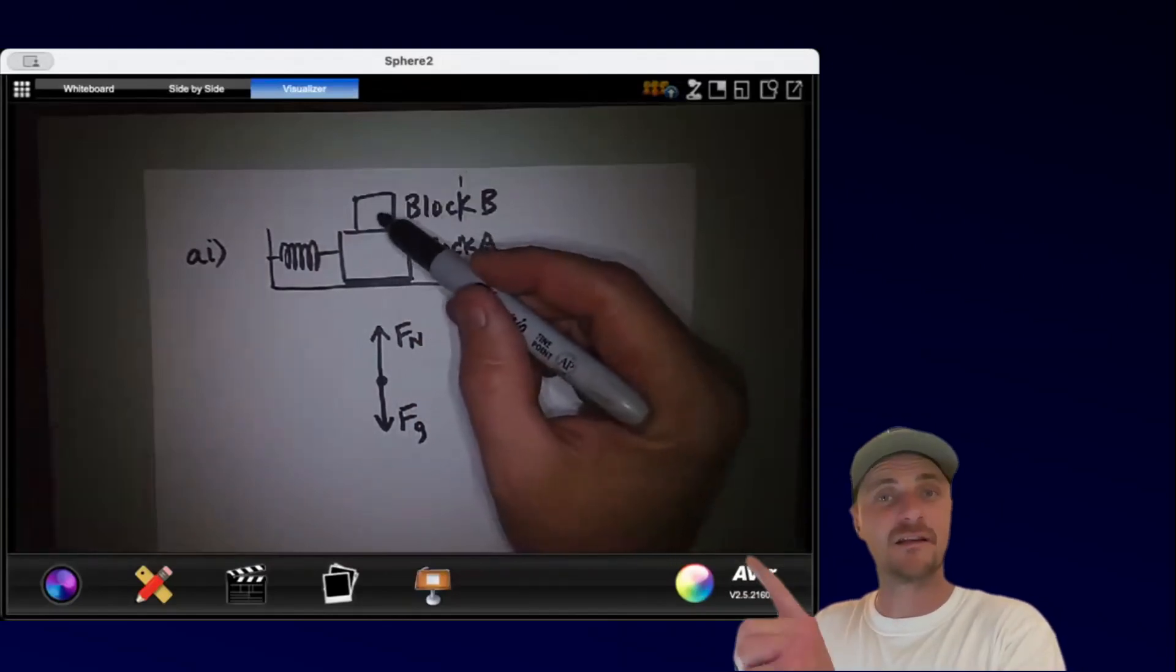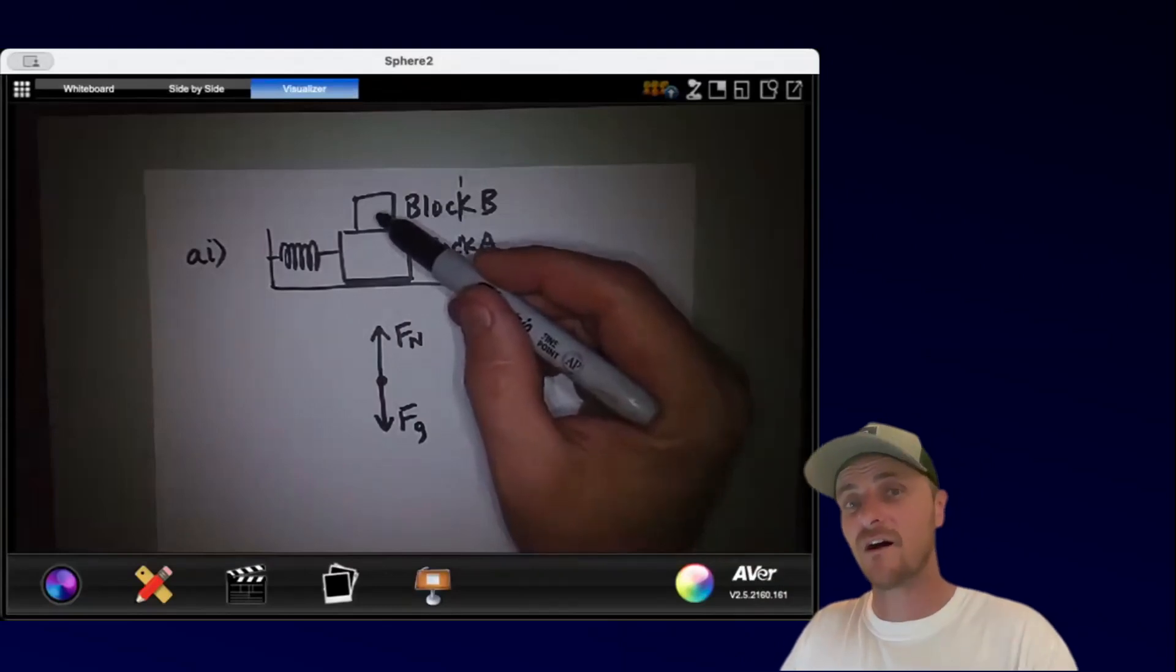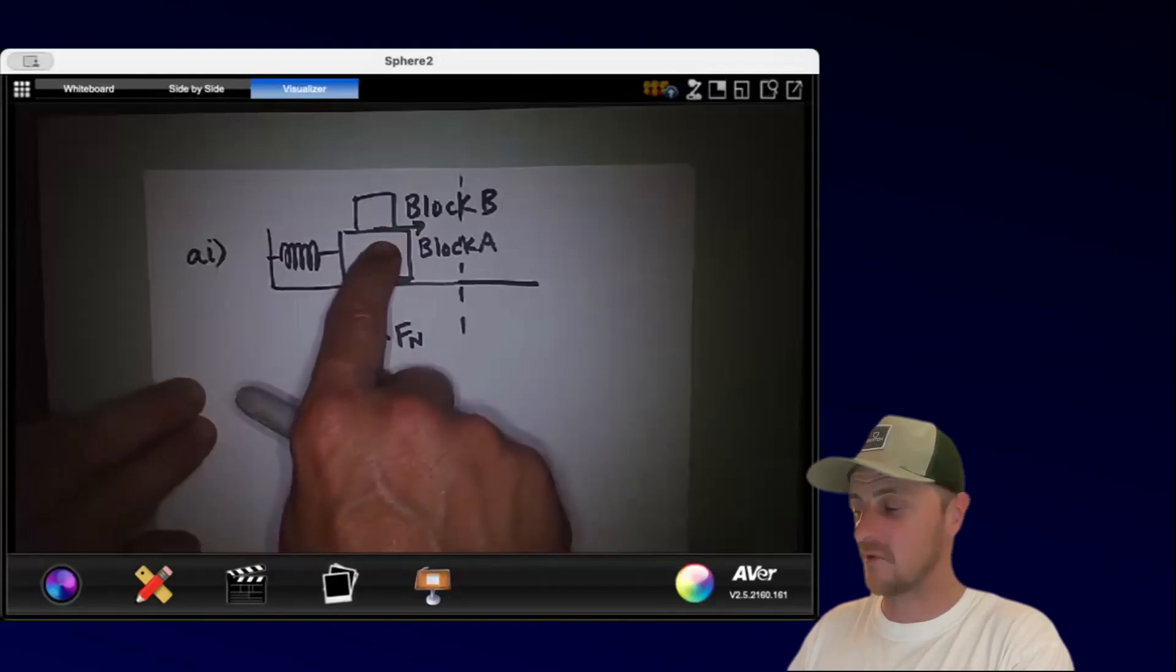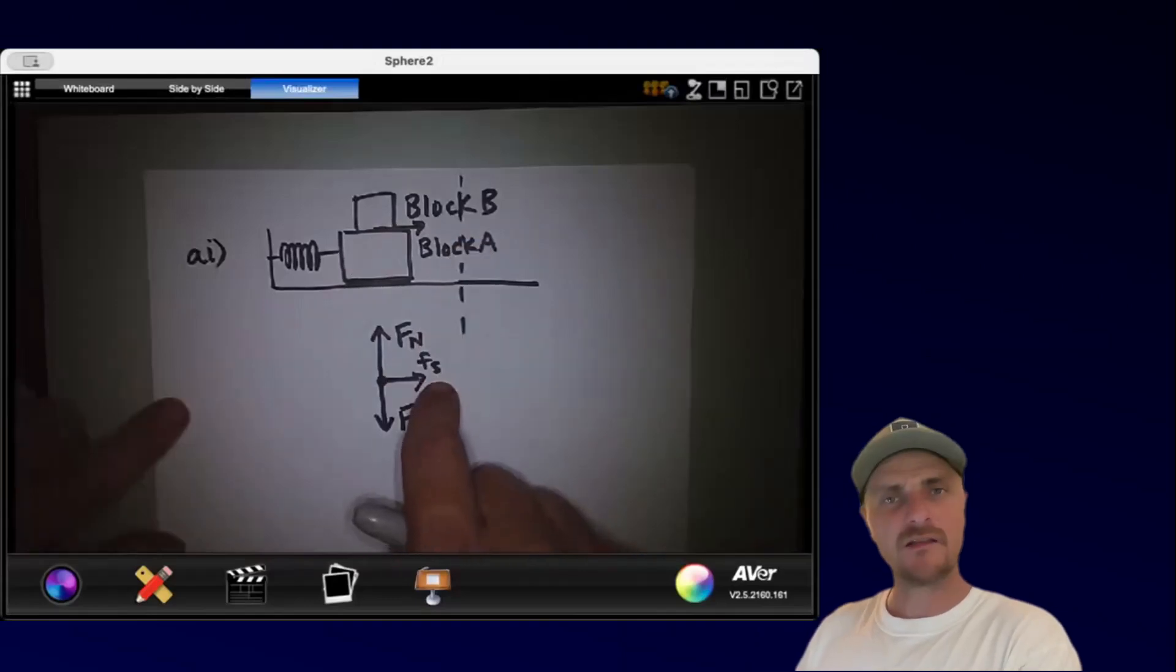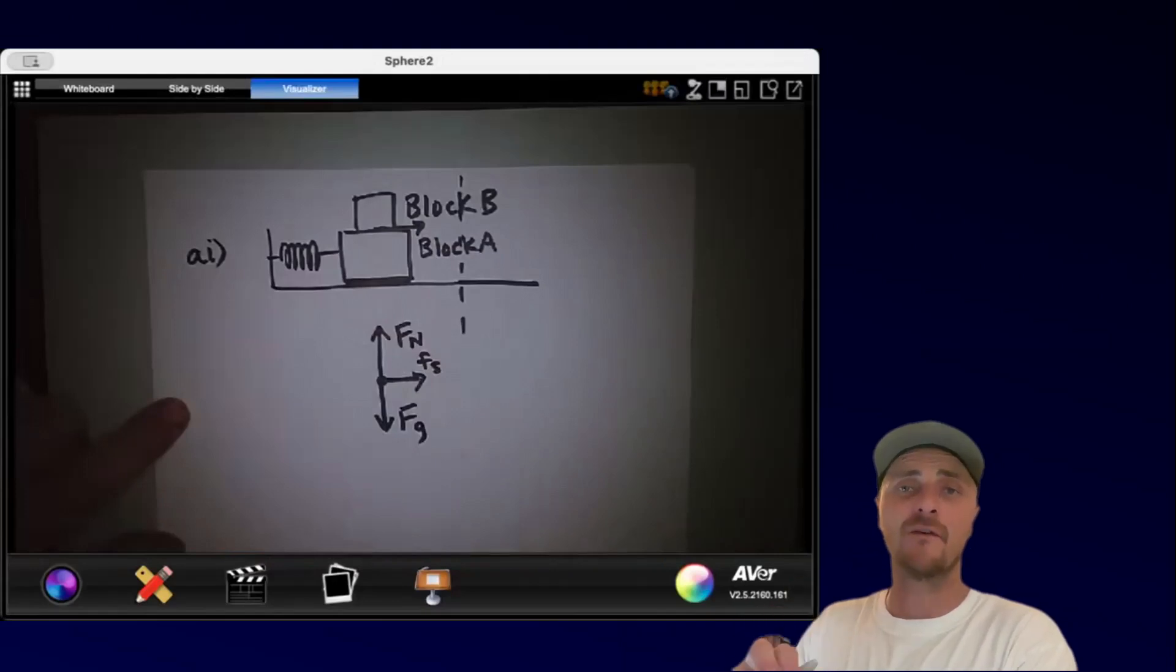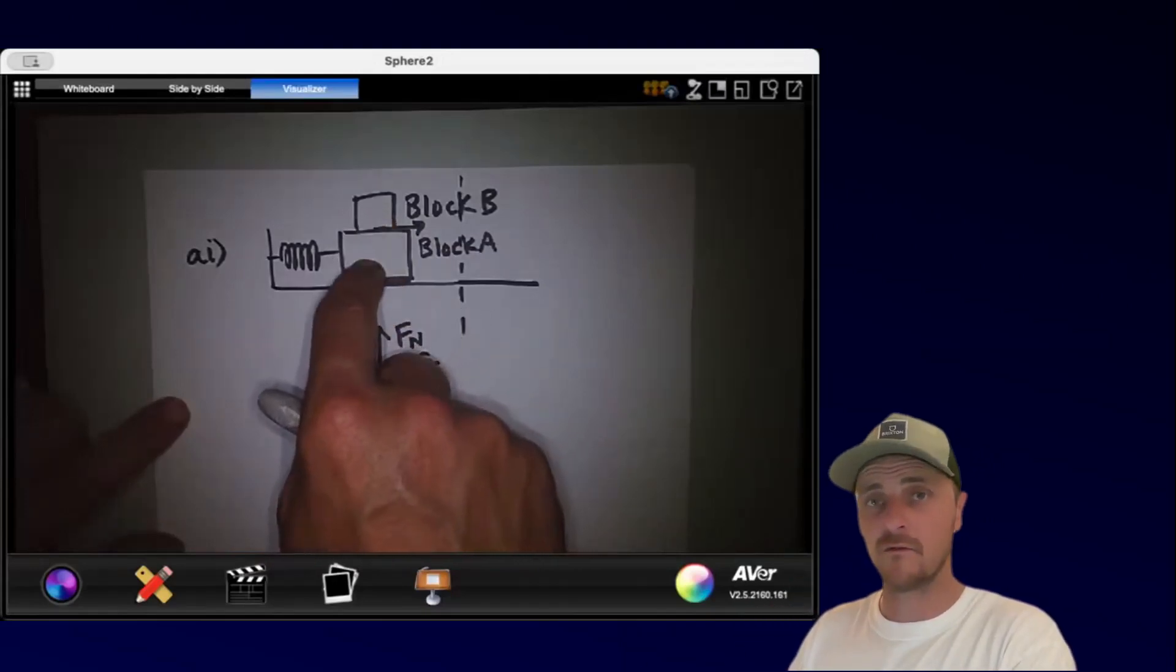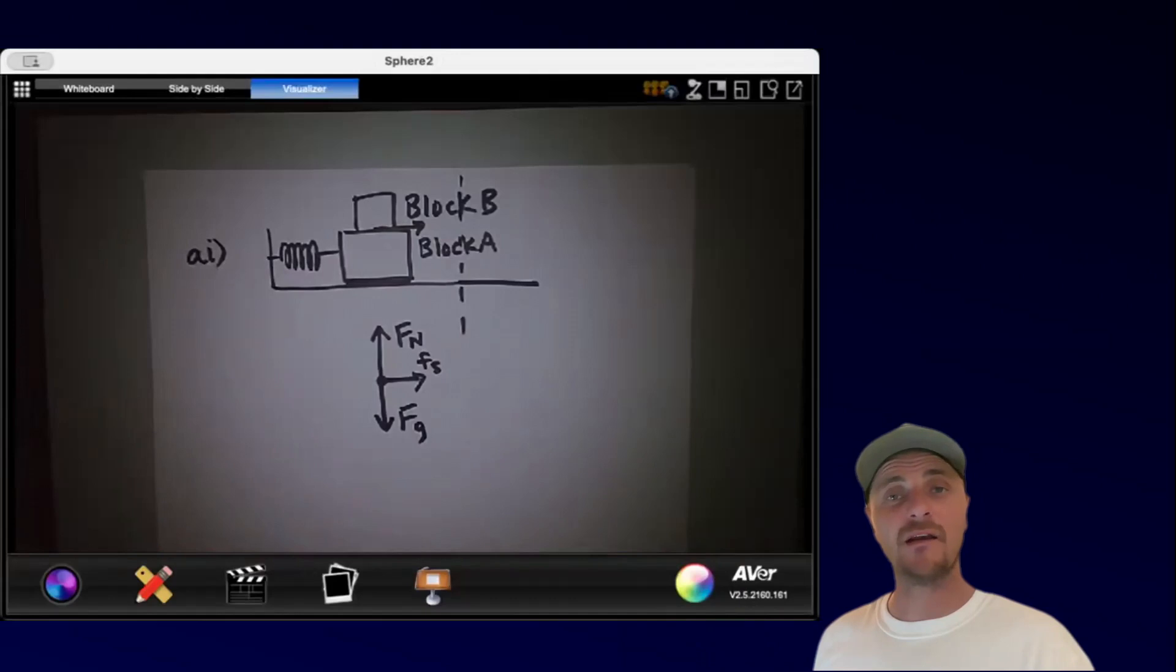And finally, if this block B is going to accelerate back to equilibrium, there must be some net force causing that acceleration. And what would it be? It must be the frictional force that causes block B to stick to block A as the system accelerates back to equilibrium. It might surprise you that this is a static frictional force since the system is moving. But remember, kinetic friction is the friction of sliding, and block B is not sliding relative to A. It's sticking to block A, and therefore it is a static friction. All right, there's our free body diagram.